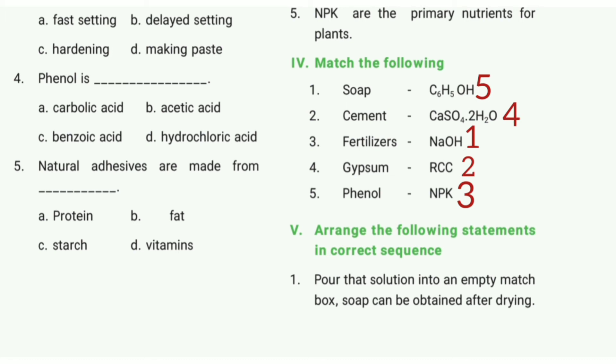Fourth one: Gypsum — the answer is CaSO₄·2H₂O. Fifth one: Phenol — the answer is C₆H₅OH.